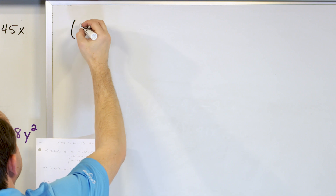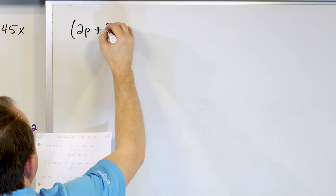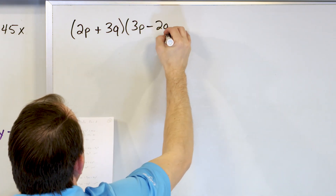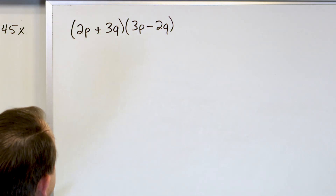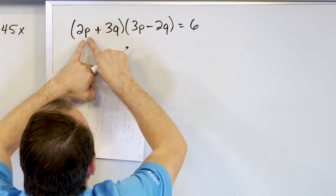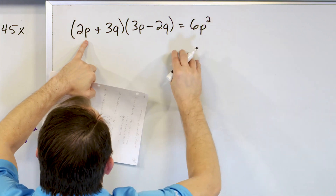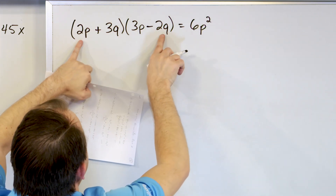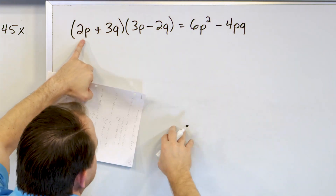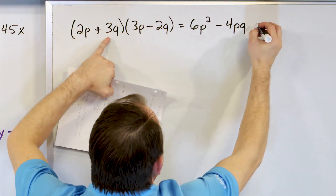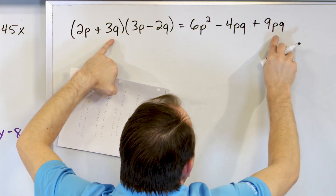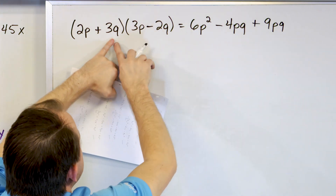What if we have (2p + 3q)(3p - 2q)? The first terms: 3 times 2 is 6, and p times p is p squared, giving 6p squared. The outer terms: negative 2 times positive 2 is negative 4, and you have q times p, so negative 4pq. The inner terms: 3 times 3 is 9, and q times p gives 9pq.